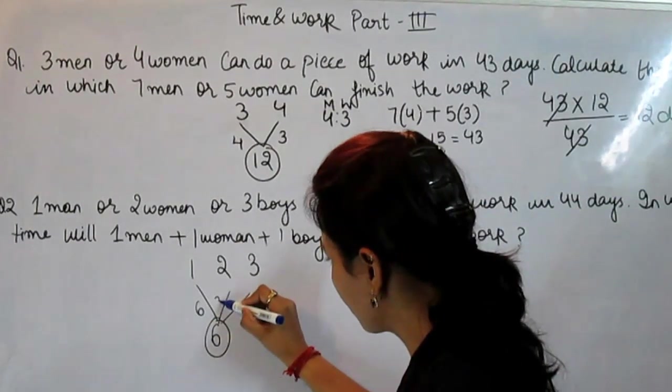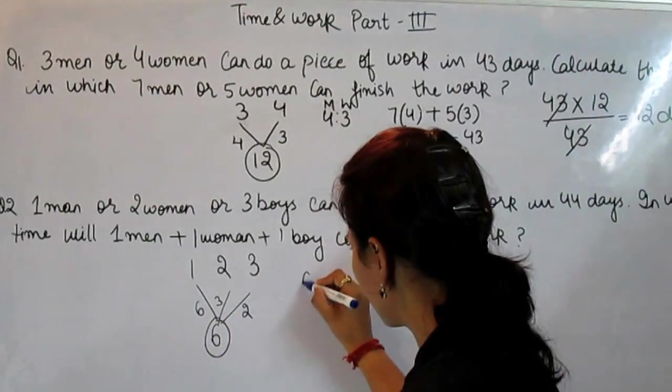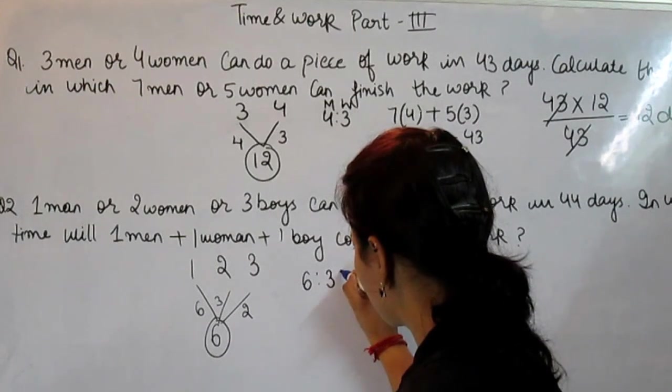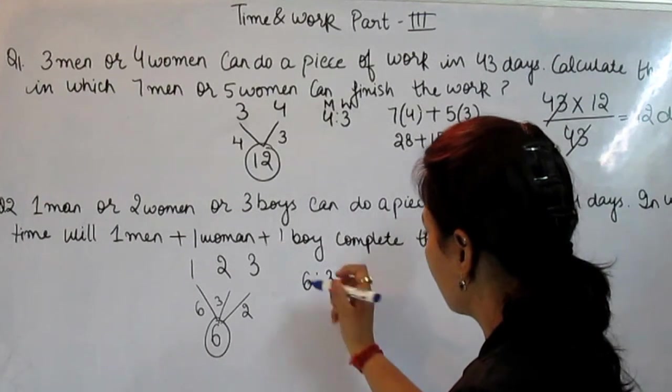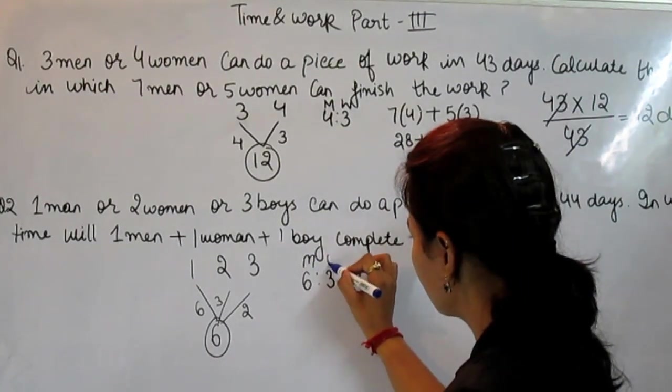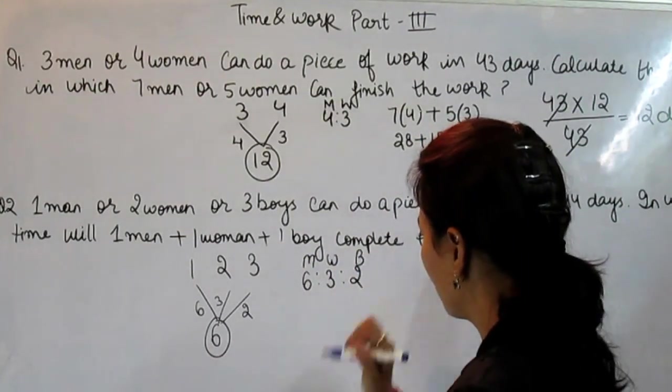And the ratio is 6, 3, 2. This is the ratio of man, this is the woman, and this is the boy.